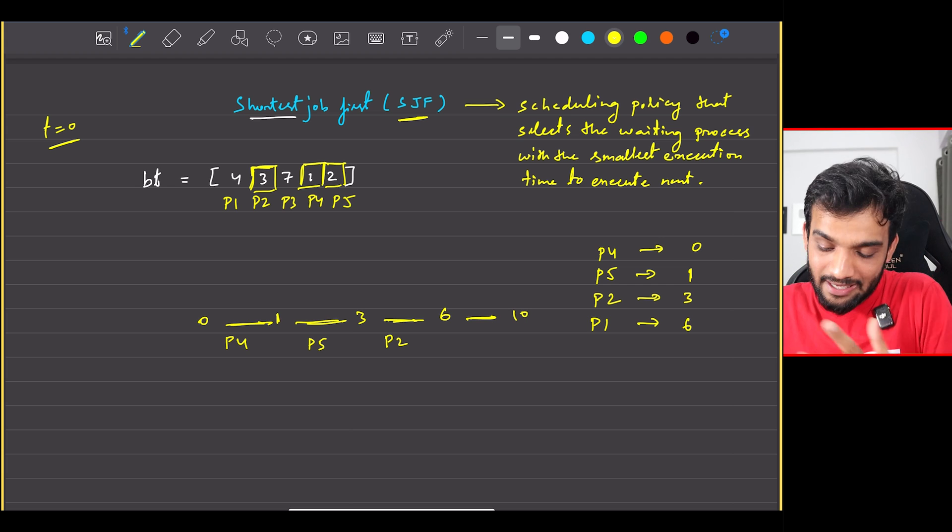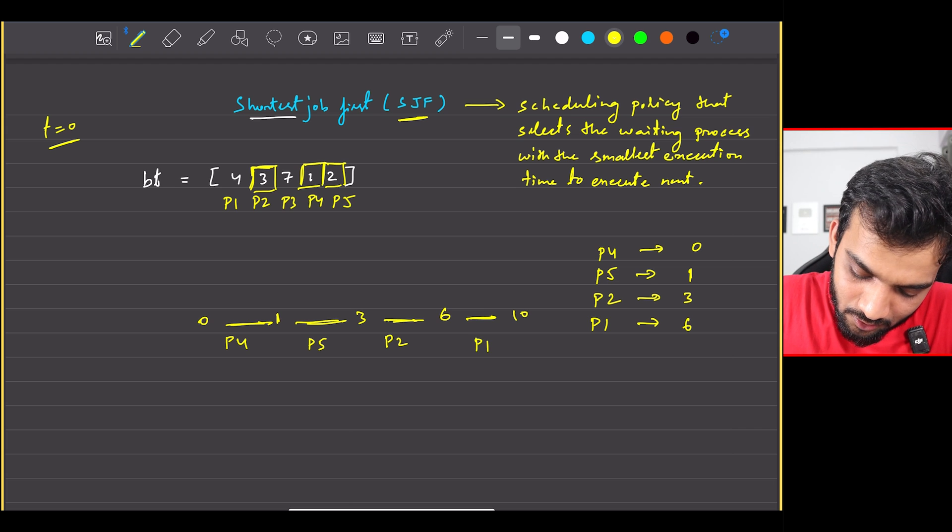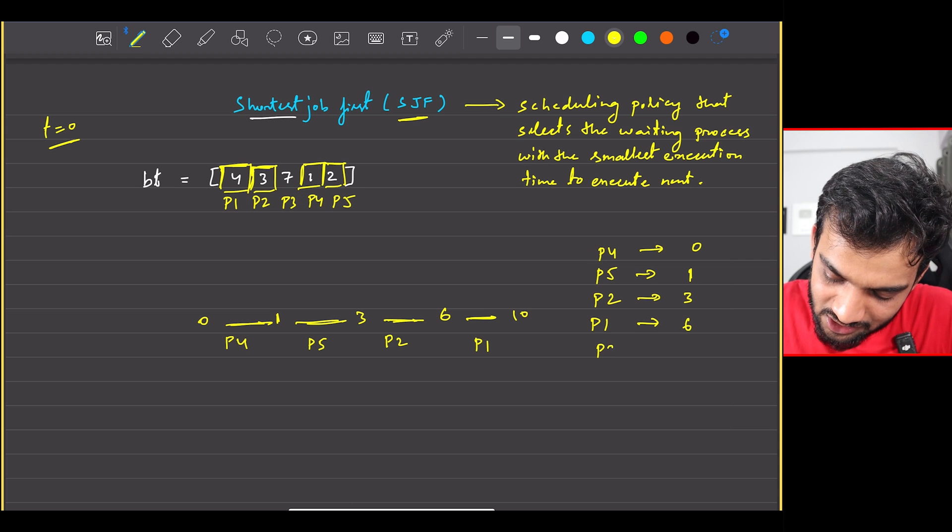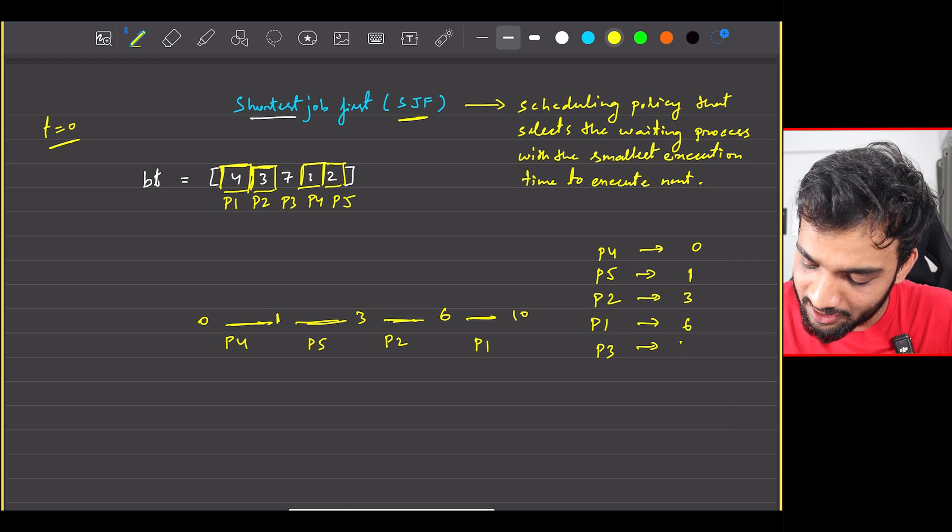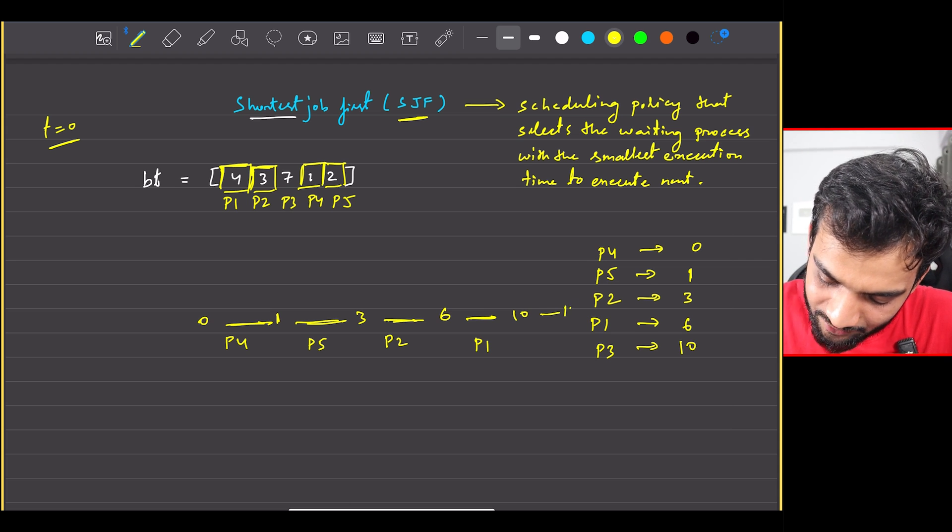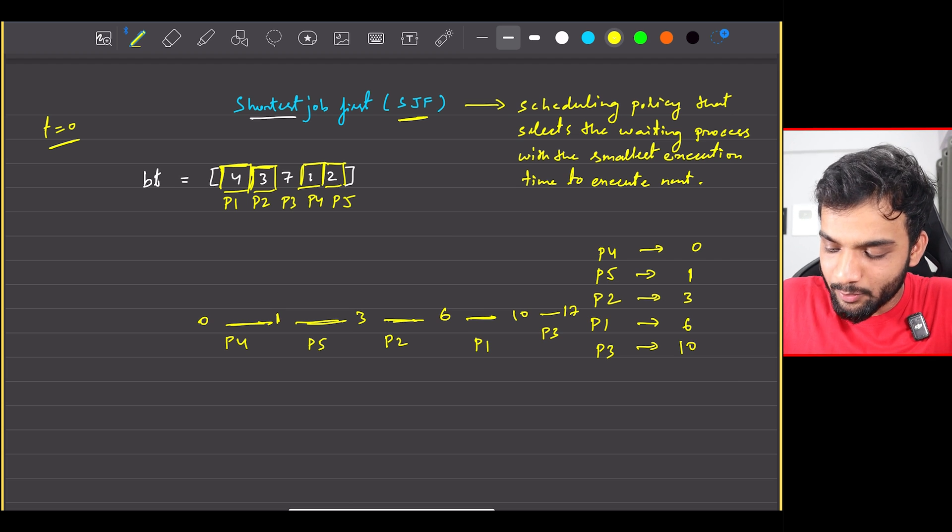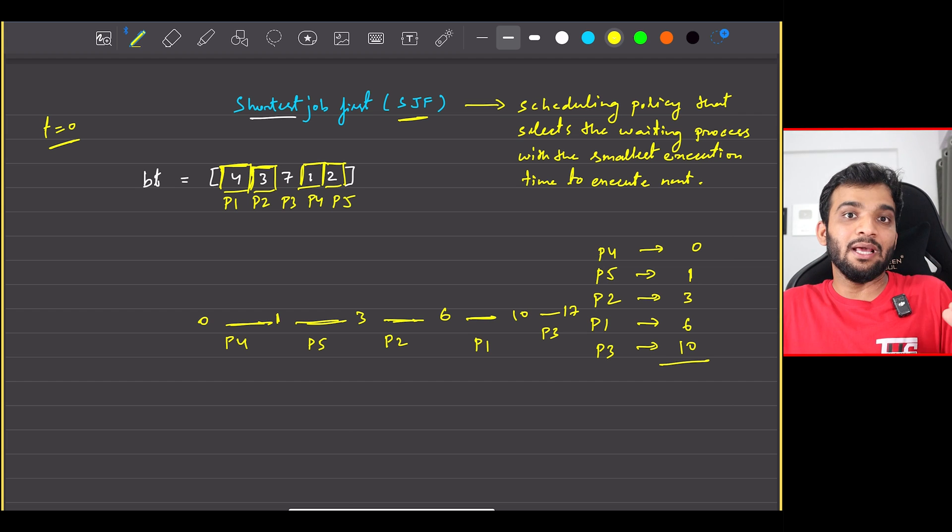So can I say P1 starts at six, so the waiting time is six. It is taking four seconds so it's gonna go ahead till 10. So that's for P1. Which one after that? P3, because that is the only one left. So P3 starts at 10 and it will go on till 17. Done and dusted.